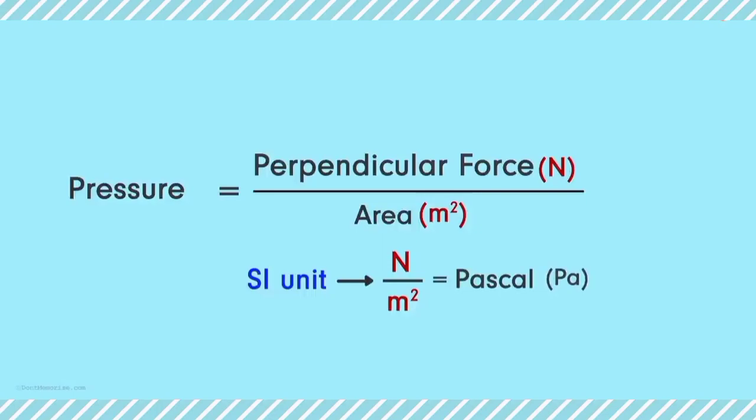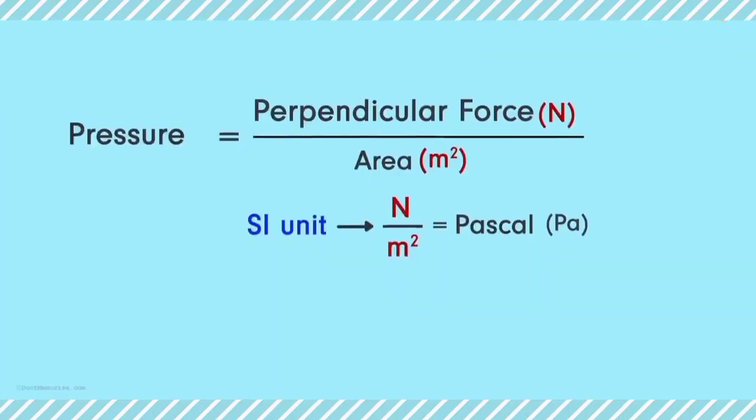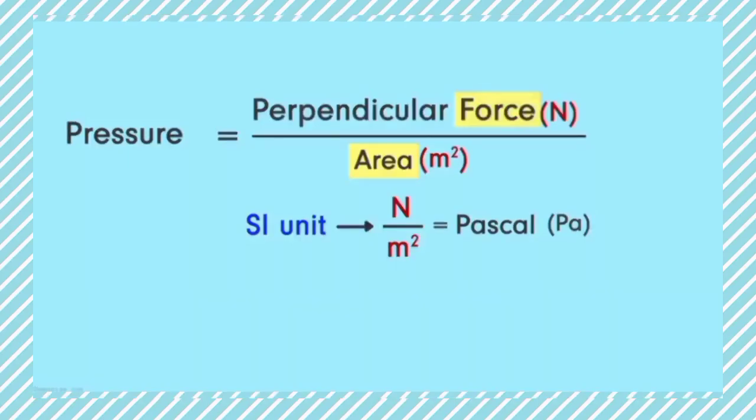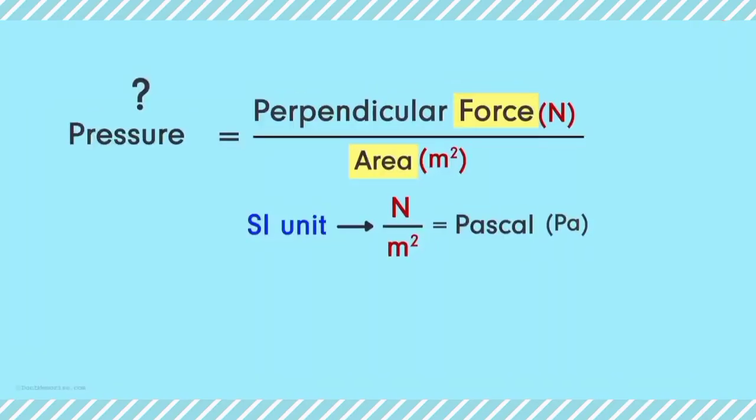In the denominator of the fraction, what is this area? This area is nothing but the area on which the force is applied. Let's say I keep force constant and I keep increasing this area. What will happen to the pressure?